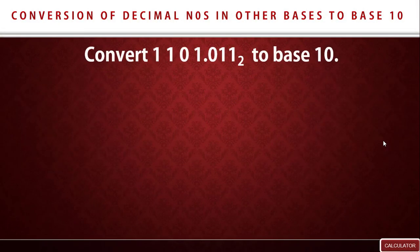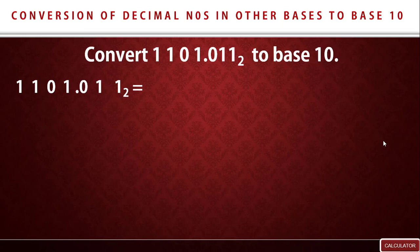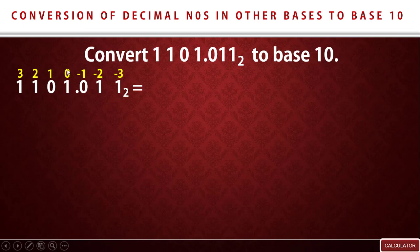For example one, we are asked to convert 1001.011 in base 2 to base 10. Write down your number first. The next thing is to use power expansion. Write down the powers on top first. The last digit in the whole number part starts at power zero, then one, two, three moving left. After the decimal point, the first digit is minus one, the next is minus two, and the next is minus three.